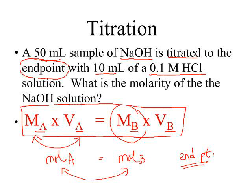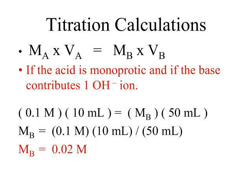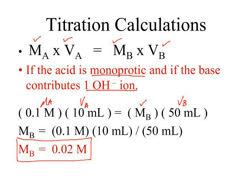So what you're going to do is take the 10 milliliters of the acid times its molarity and set it equal to the volume of the base and solve for the molarity of the base. Let's look at this problem worked out. As long as your acid is monoprotic and as long as your base delivers only one hydroxide ion, then this equation is simple and easy to use. Again, we take the molarity of the acid times the volume of the acid, set it equal to the molarity of the base times the volume of the base. Solving for the molarity of the base, we get 0.02 molar.